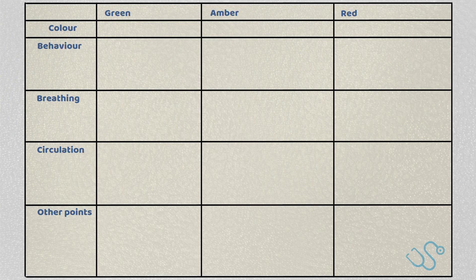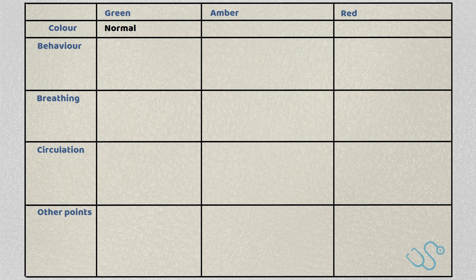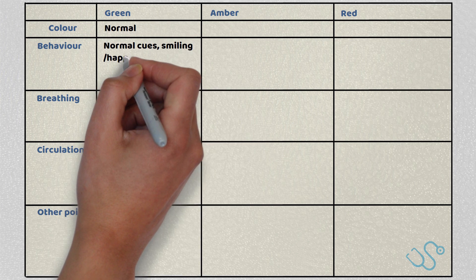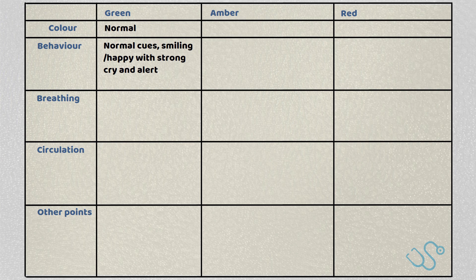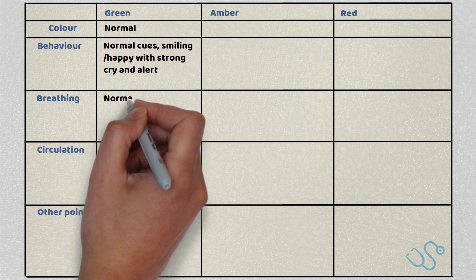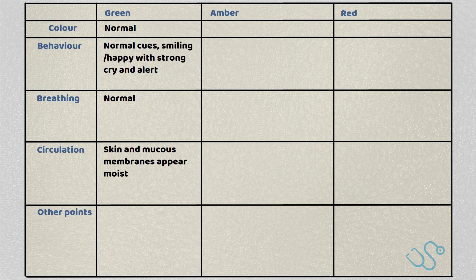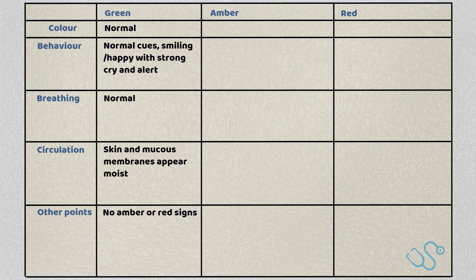A child deemed green would look normal in colour. Their behaviour would be normal — smiling, happy children with a strong cry and they'll be alert. Their breathing will be normal, their skin and mucous membranes will appear hydrated, and there won't be any red or amber signs.